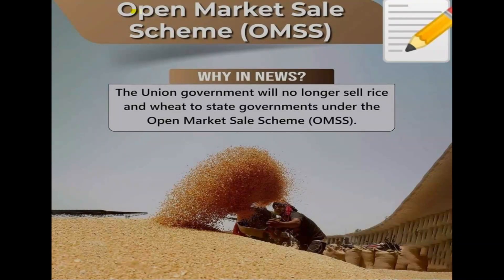Today we are going to discuss the Open Market Sales Scheme, also known as OMSS. The Indian government sells rice and wheat to state governments under the Open Market Sales Scheme.